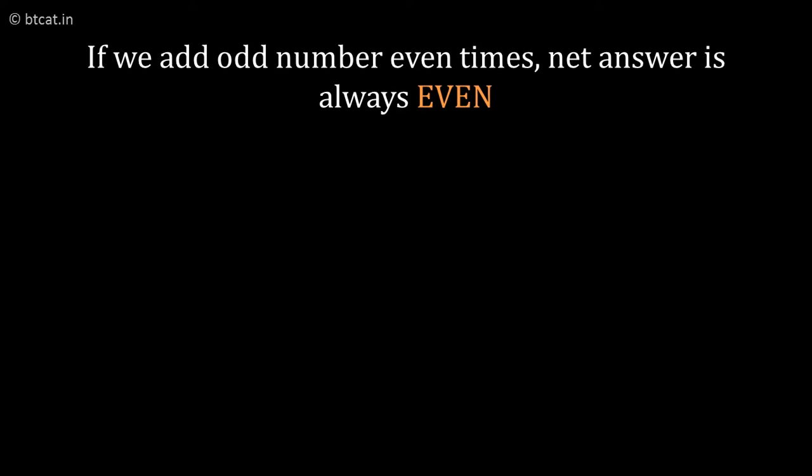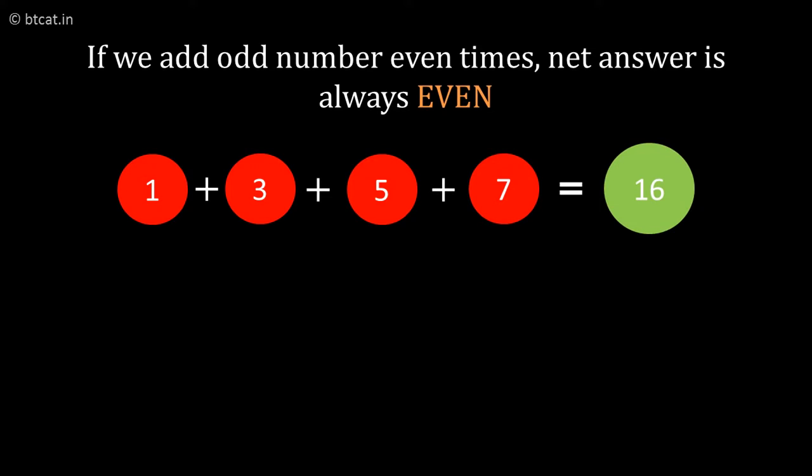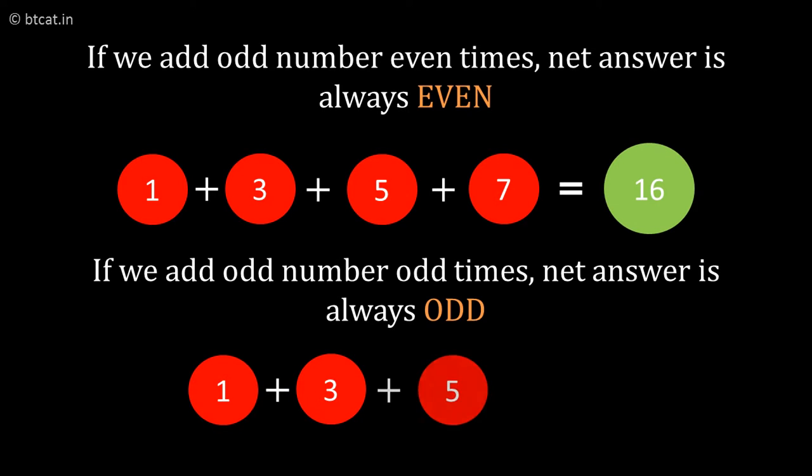Let's look at another concept: the addition of odd and even numbers. The basic rule says that if we add odd numbers an even number of times, the net answer is always even. If we add odd numbers an odd number of times, the net answer is always odd.